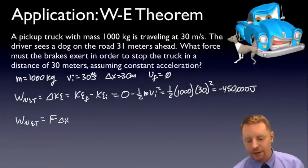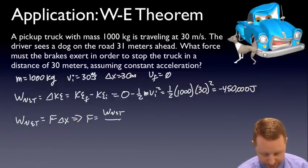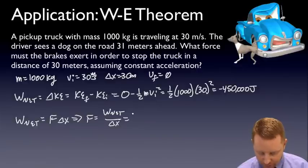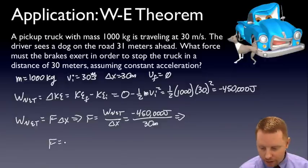Therefore force equals network divided by displacement, or negative 450,000 joules over 30 meters, which gives us a final force of negative 15,000 newtons.